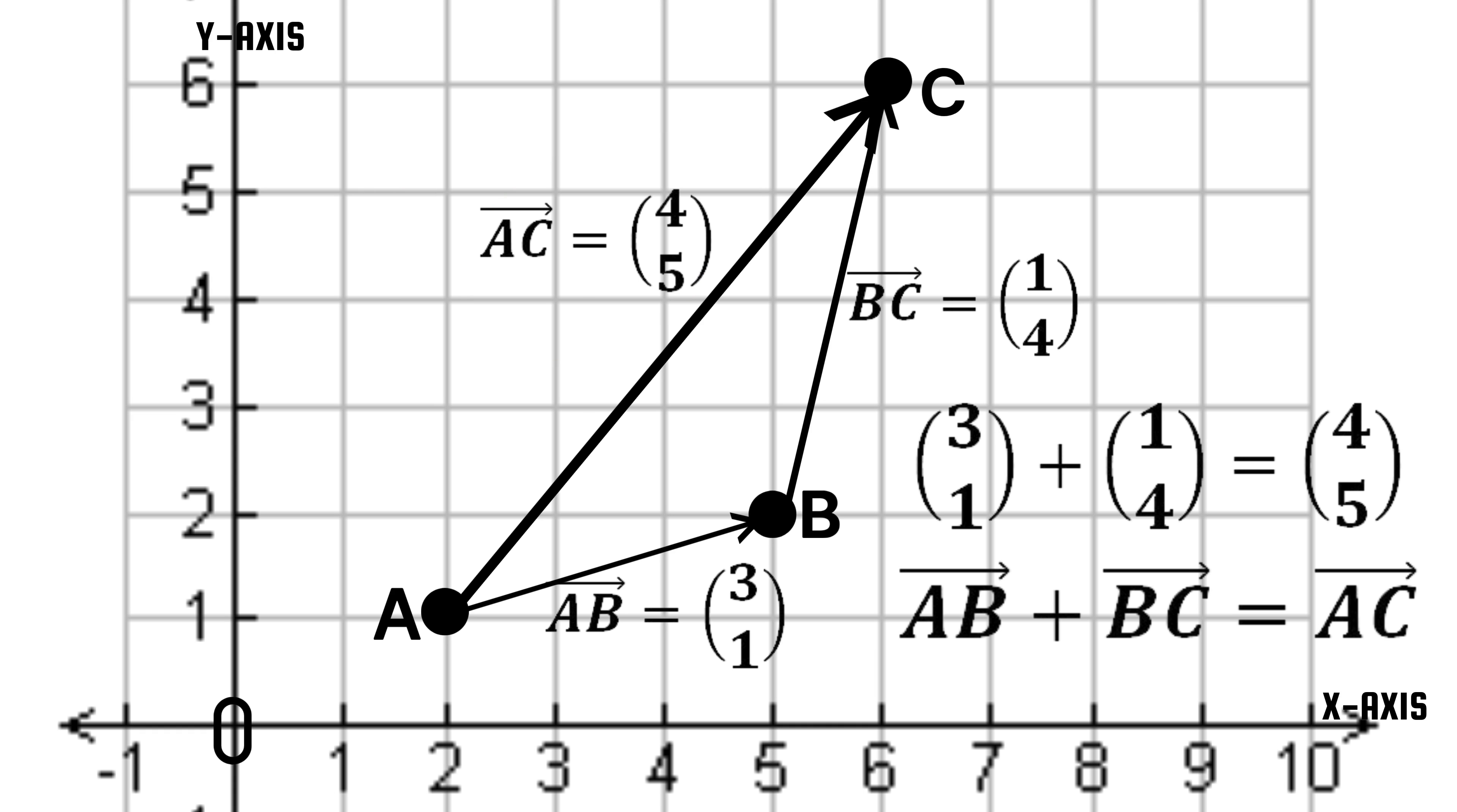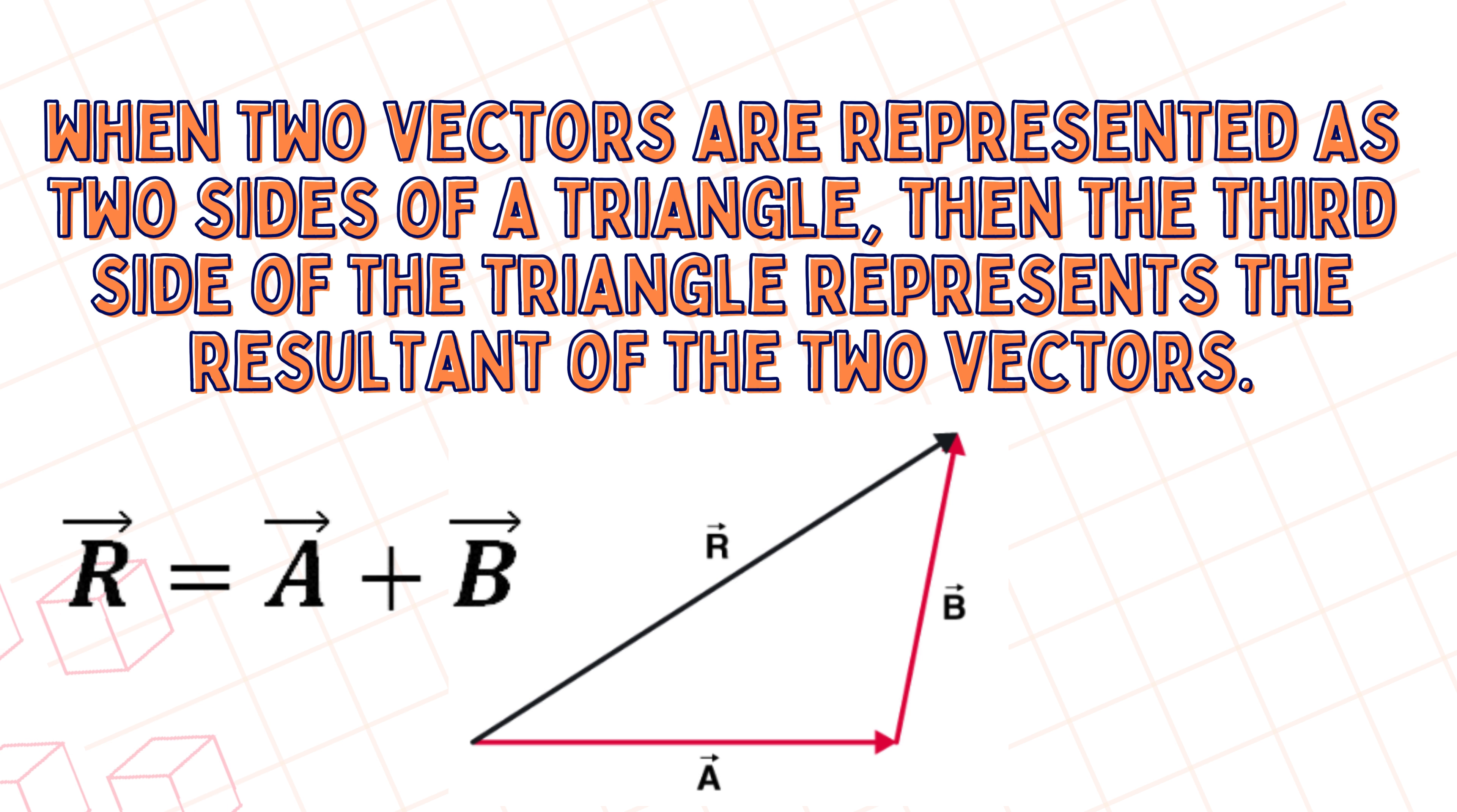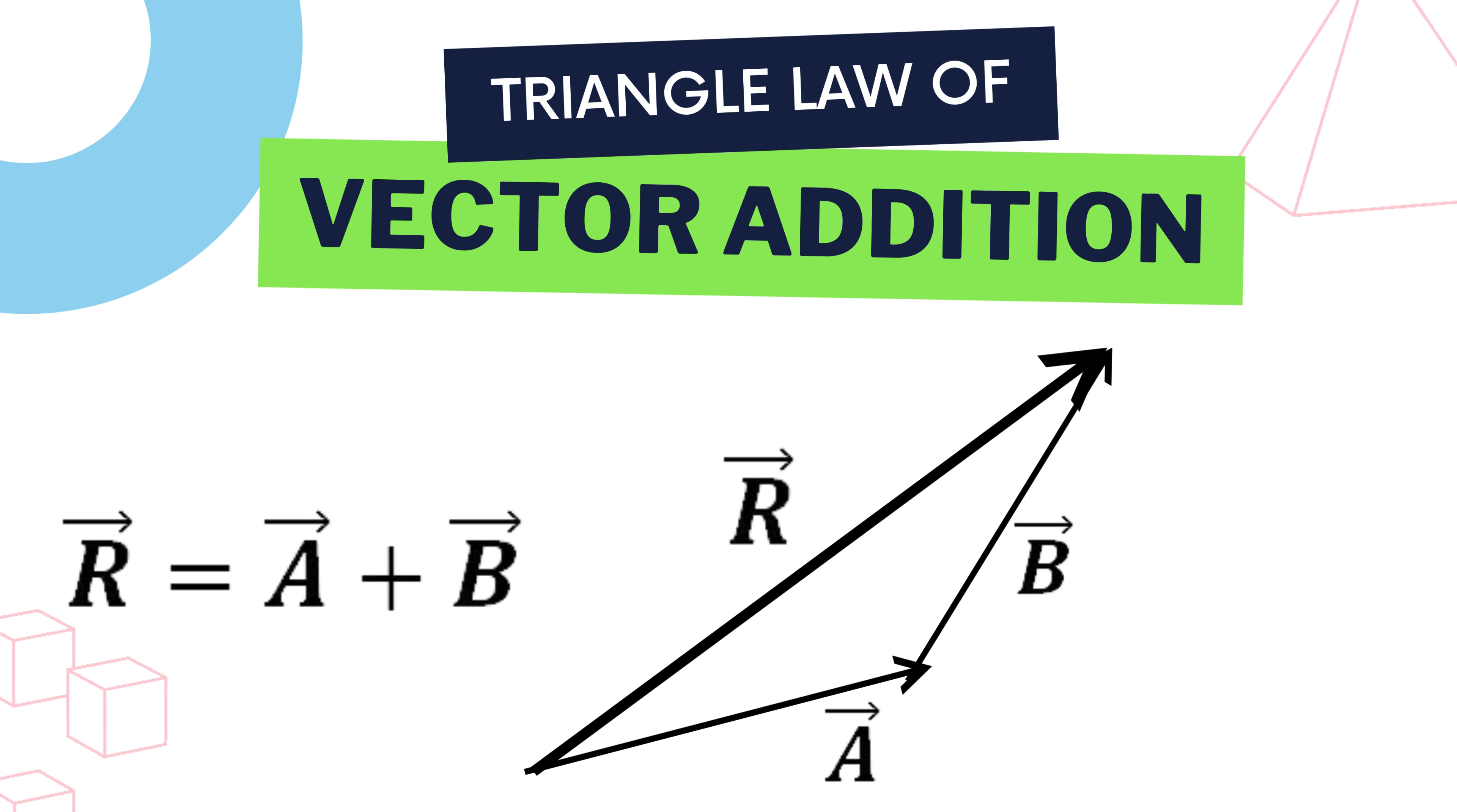The triangle law of vector addition states that when two vectors are represented as two sides of a triangle, then the third side of the triangle represents the resultant of the two vectors. This law is used to add two vectors when the first vector's head is joined to the tail of the second vector, and then joining the tail of the first vector to the head of the second vector to form a triangle, and hence obtain the resultant sum vector.